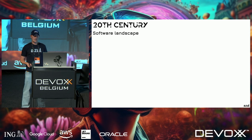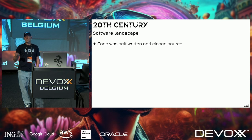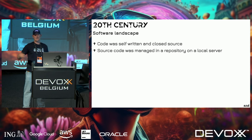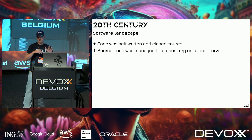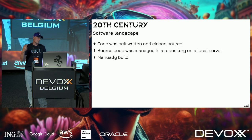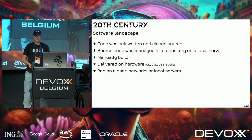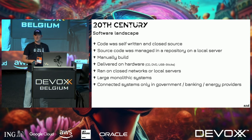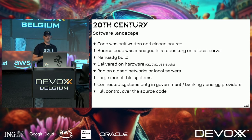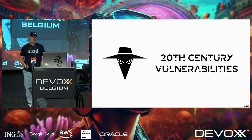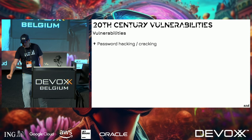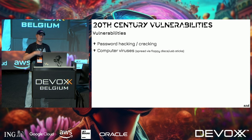The software landscape back then looked totally different. Code was self-written and closed source, managed in a repository or even just a local folder — copy the folder and rename it was our version control. Everything was built manually, delivered on hardware, USB sticks, CDs, DVDs, or floppy disks, and it ran on closed networks or local servers.